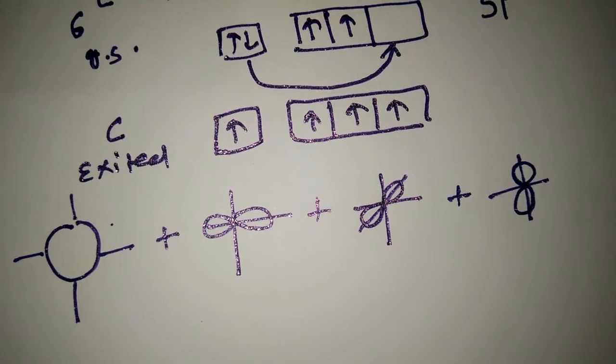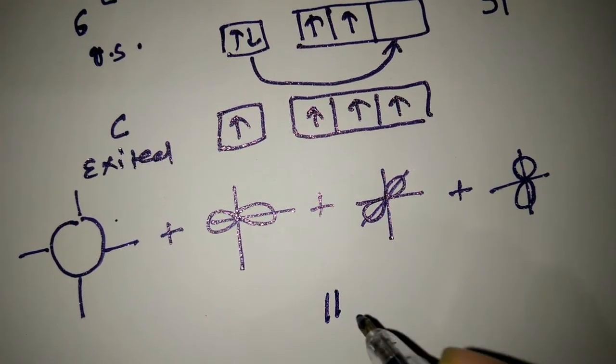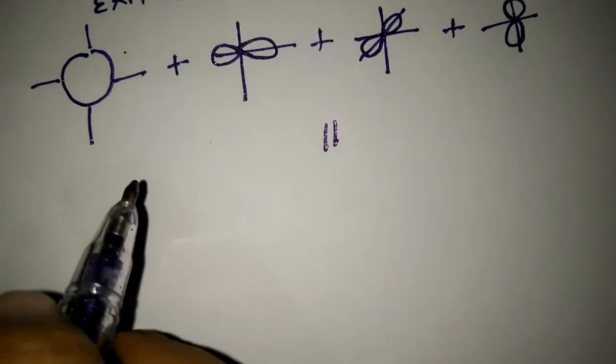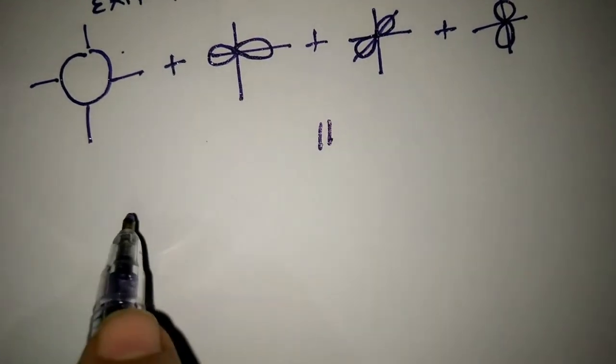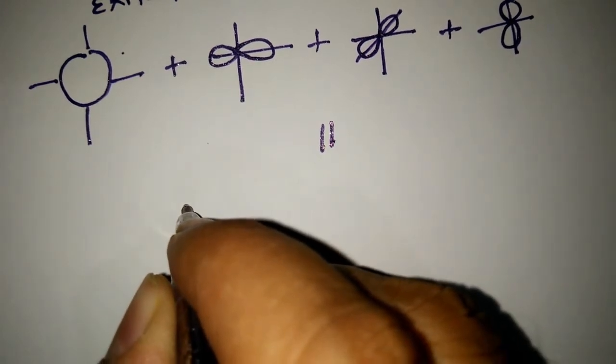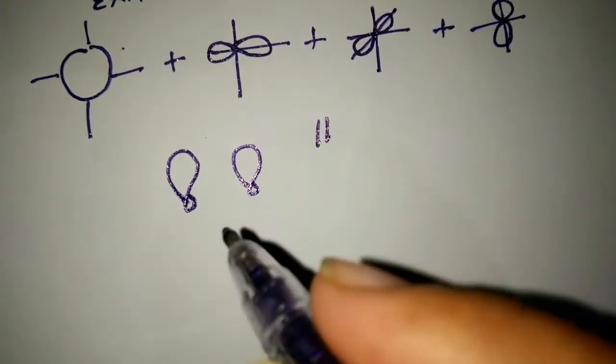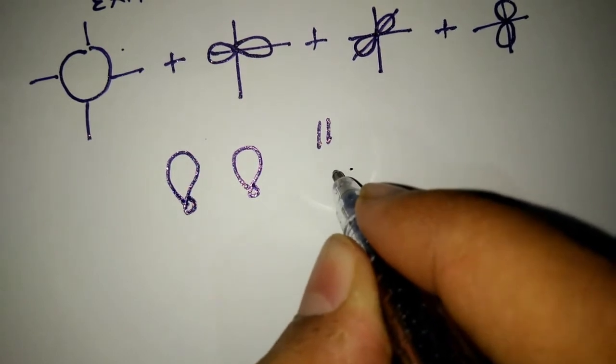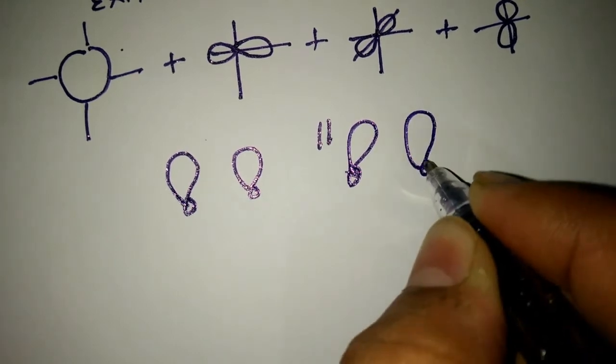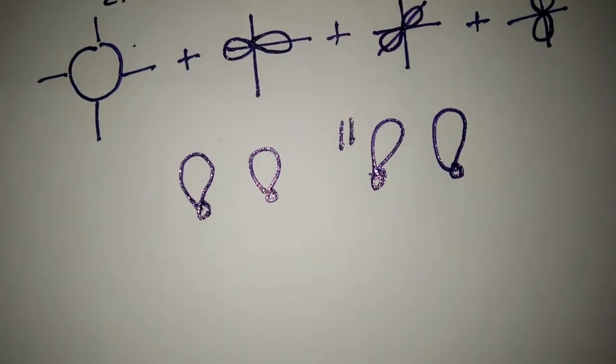These four orbitals mix together and form four identical hybrid orbitals. That is, the shape of hybrid orbitals are identical. Four hybrid orbitals are formed with equal energy and shape.